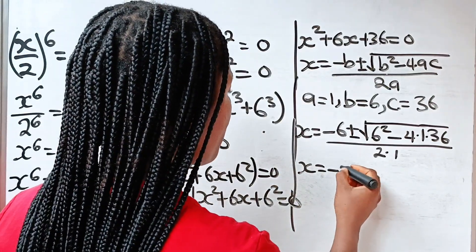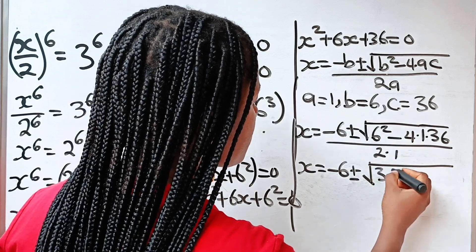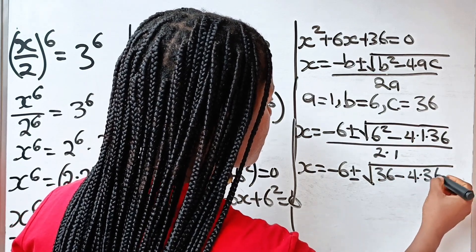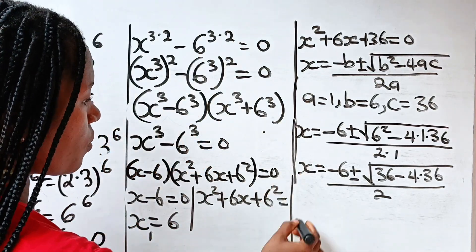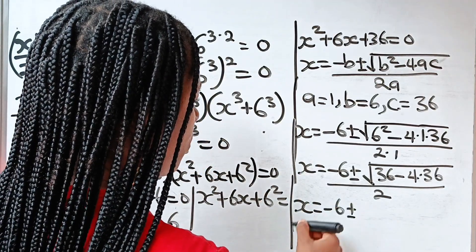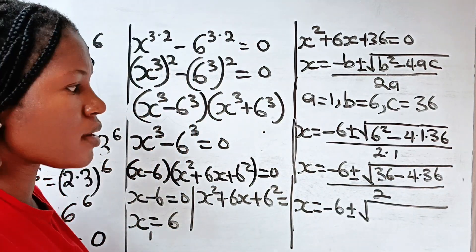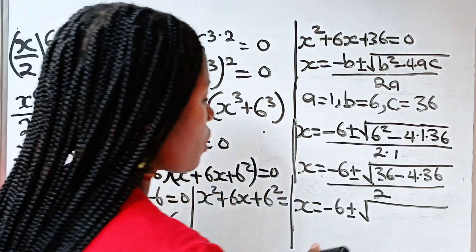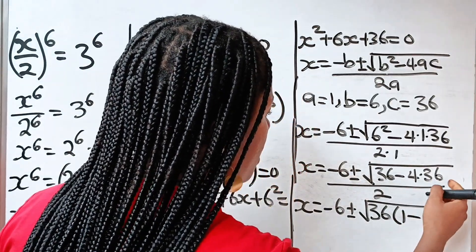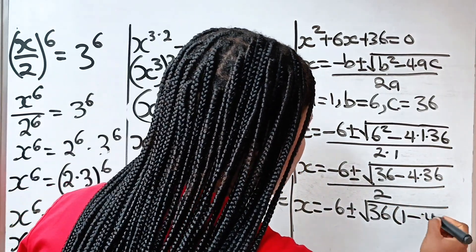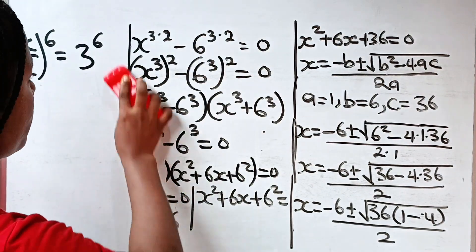So x equals minus 6 plus or minus square root of 36 minus 4 times 36, divided by 2. We can factor 36 out from under the radical: 36 divided by 36 is 1, and 4 times 36 divided by 36 leaves 4, giving square root of 36 times 1 minus 4, which is square root of 36 times minus 3, divided by 2.